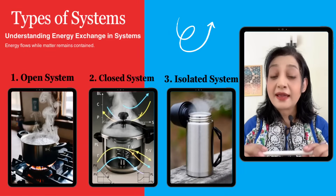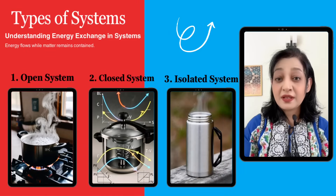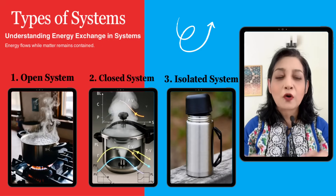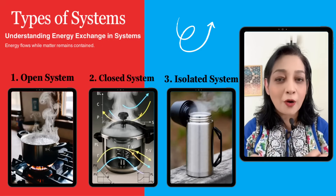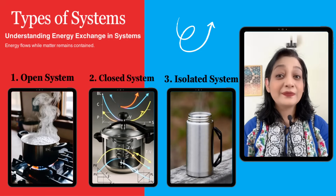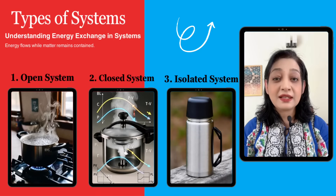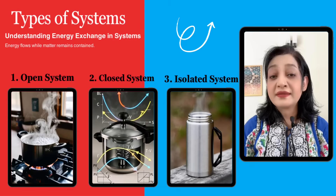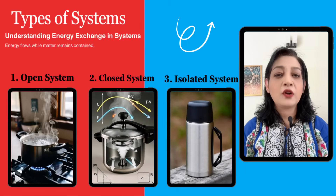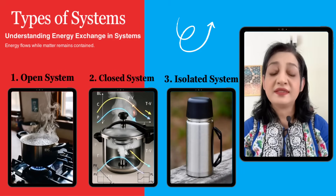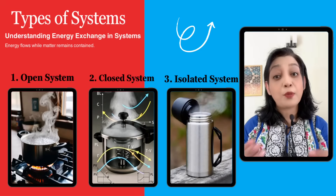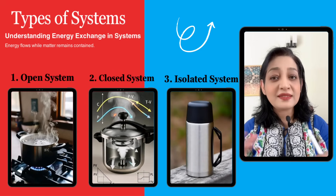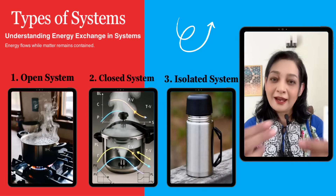There are three types of systems, depending on whether mass and energy can cross the boundary. Number one is the open system: both mass and energy can enter or leave the system. For example, a boiling pot without a lid — steam escapes and heat enters.